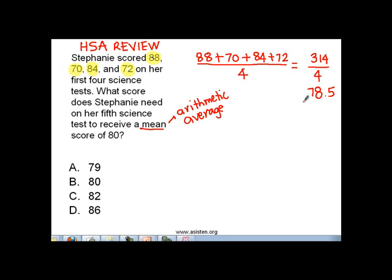When you are taking your HSA, most likely you are using a calculator, so you can use your calculator to get this number. Now, on the first four science tests, Stephanie's average is 78.5. That's her mean score, 78.5.